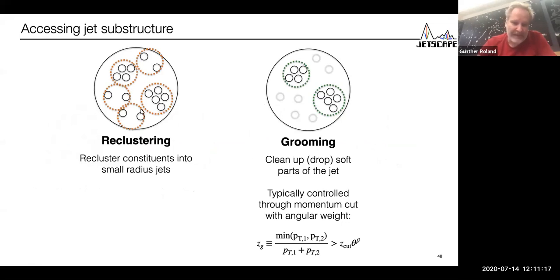One is reclustering, where we take the constituents that were found, say by anti-KT, and we take the same constituents but recluster them with a different jet algorithm that gives us better access to the sequence of splitting events that led to the subjet structure of the event.